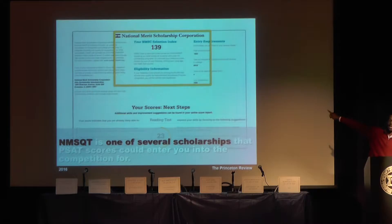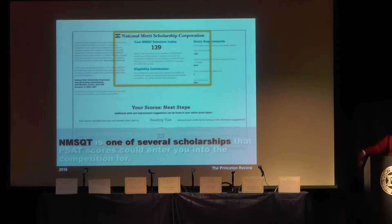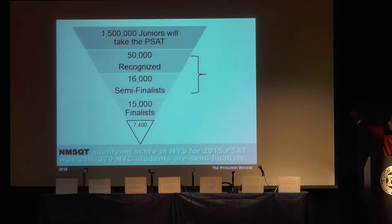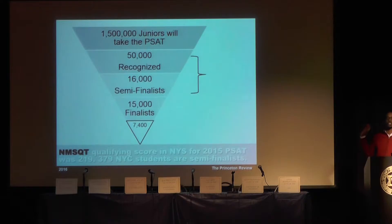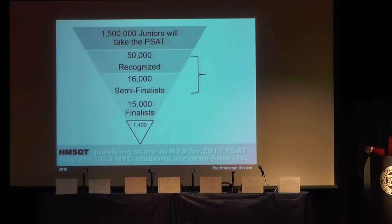For National Merit, in New York City the index number was 219. They calculate it by adding the math, reading, and writing test scores and doubling the number. Last year, for those who took it in 2015, the index was 219. It will show on your report if you qualify for National Merit — you probably would have heard about that already. They choose about 7,400 students across the entire country, so it's a nice award but not a lot of people get it. Don't sweat it. There are lots of other scholarship opportunities. Most scholarships are not tied to the PSAT, so don't kill yourself over National Merit if you haven't qualified. If there's a 10th grader who's close, maybe they should prep and think about it.